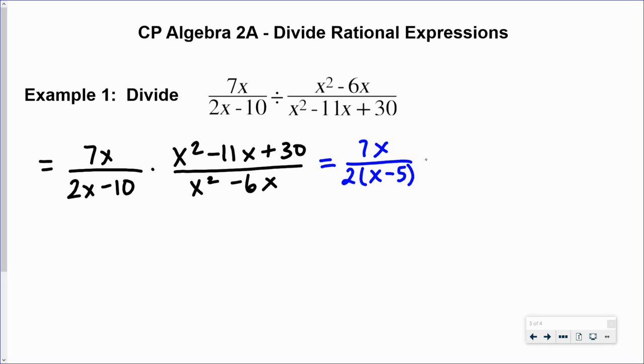Now we're going to move over to the second expression. x squared minus 11x plus 30. That will factor to, it looks like, x minus 5 times x minus 6.